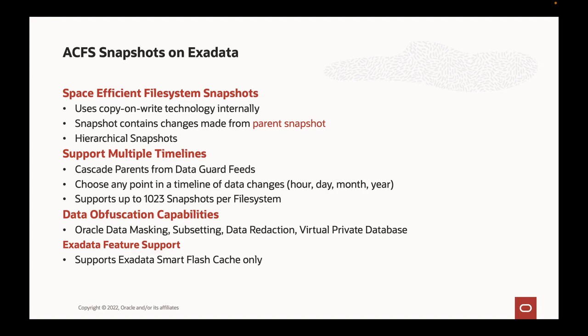Just as with Exadata sparse snapshots, I can create a hierarchy of ACFS snapshots — snapshots of snapshots — and use DataGuard feeds to create that timeline of data changes in a similar fashion. I can support up to 1,023 snapshots per file system with ACFS — a key differentiator from Exadata Sparse Clones. If you need more than 10 snapshots per database, ACFS might be a technology worth investigating further depending on the use case.